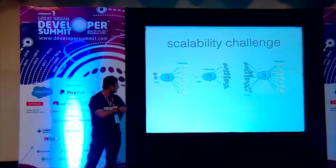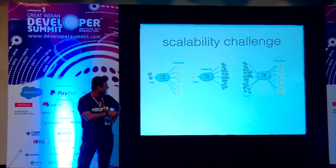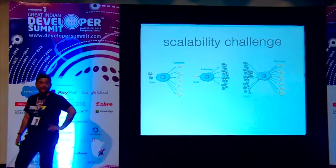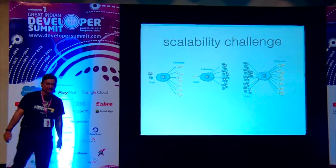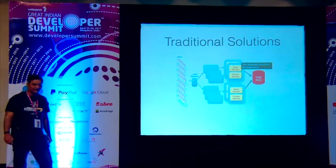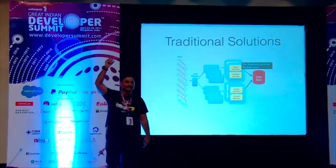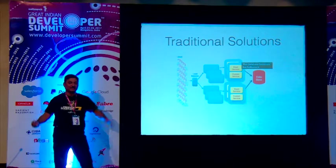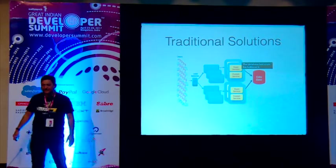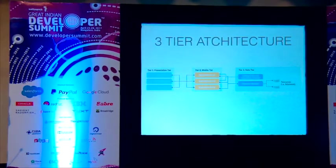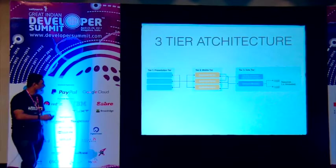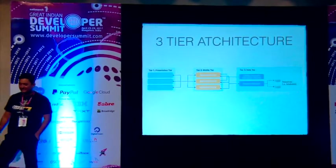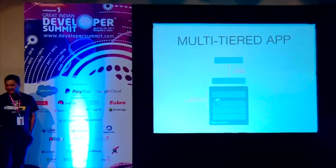Traditional approaches just stack more HA proxies, but that might not be the best solution — you're just trying to cater to the biggest load. We're all building three-tier applications: client layer, middle layer, data layer — and we've been building this for the past 10 years. You might also have multi-layered applications where your presentation layer calls the application layer, which calls the data layer.